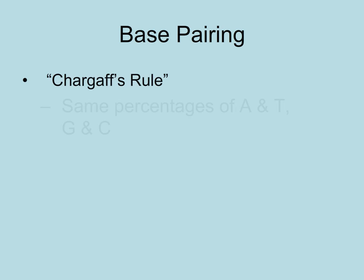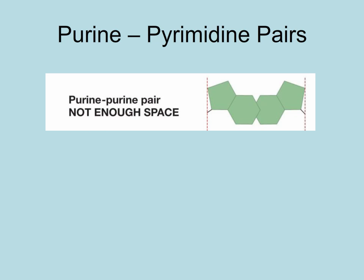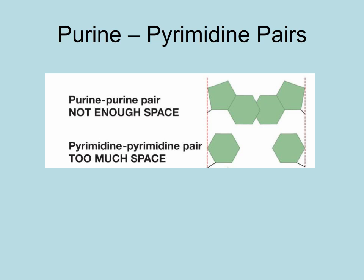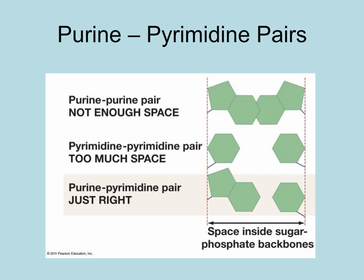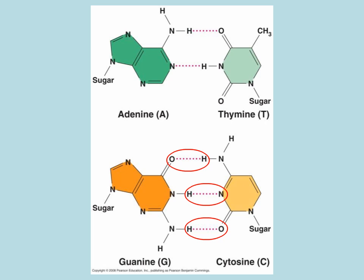These bases pair with each other, but only in very specific combinations according to Chargaff's rule. Chargaff discovered that DNA contained the same amount of adenine as thymine and the same amount of guanine as cytosine, concluding that adenine paired with thymine and guanine paired with cytosine. A purine-purine pair would be too wide, two pyrimidines would not come close enough, but a purine-pyrimidine pair is just right. Adenine and thymine form two hydrogen bonds, while guanine and cytosine form three, so incorrect pairings would have wrong spacing and wrong bond numbers.